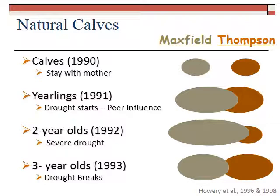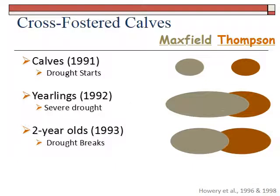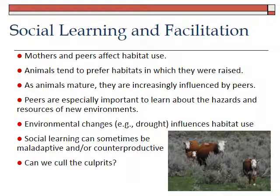What about the cross-fostered calves? Did they go with their rearing mothers or their genetic mothers? The results showed basically the same thing happened: the cross-fostered calves were influenced by their rearing mothers, not their genetic mothers. So it turns out that this habitat selection feature is passed on through learning. In 1991 the calves stayed with their rearing mothers. In 1992, during the drought, the Maxfield calves started ranging more widely. When the drought broke in 1993 they went back to their home territories. The bottom line is that when you have groups of cattle that are quite similar, genetics is not important — what's important is what they learn from their mother.